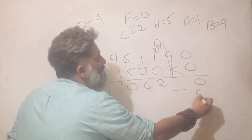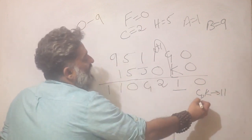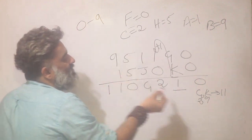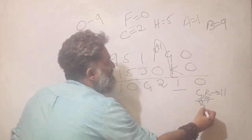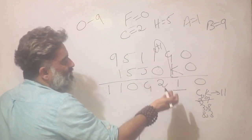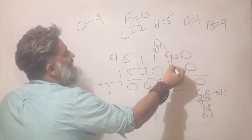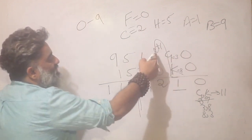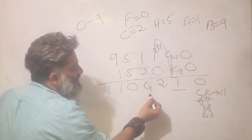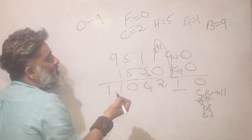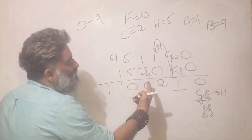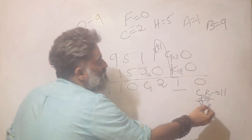Now back to G+K=11. What are the possibilities? 2+9=11 — but C=2 and B=9 are already taken, so this doesn't work. Next: 3+8 or 8+3. Let's try G=3, K=8: sum is 11, carry 1, C=2 — fine. But now 1+J=G means J=2, and C is already 2, so that's a conflict. The 3,8 story doesn't work.